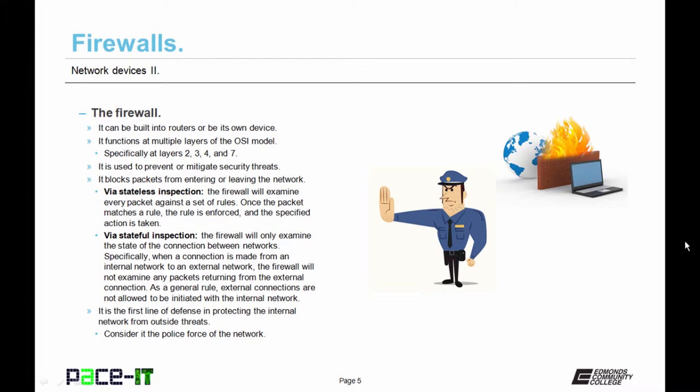The other method is stateful inspection. The firewall will only examine the state of a connection between networks. Specifically, when a connection is made from an internal network to an external network, the firewall will not examine any packets returning from the external connection. As a general rule, external connections are not allowed to be initiated with the internal network. The firewall is the first line of defense in protecting the internal network from outside threats. You can consider the firewall as the police force of the network.